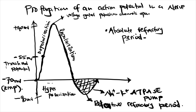Quick recap: The resting membrane potential for a nerve cell is negative 70 millivolts. A stimulus opens ligand-gated sodium channels; if strong enough, the membrane potential reaches the threshold potential at negative 55 millivolts. This is the all-or-none principle: the threshold potential must be reached for an action potential to be propagated. If it is not reached, no action potential occurs.